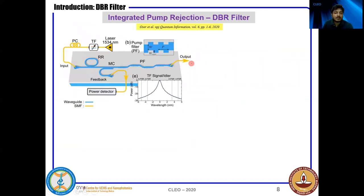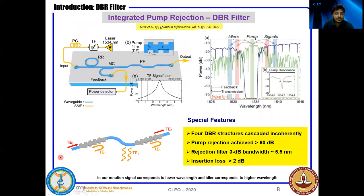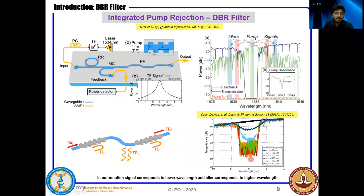Recently, Osar et al. demonstrated high-quality entanglement from a ring resonator by integrating a four-stage DBR with it. In their DBR design, the input waveguide is fundamental-moded. When TE0 is launched into the DBR with a special design, it is converted back into TE1, which does not couple back into the input that supports only TE0. So the reflection from each stage does not pass through previous stages, and as a result you can cascade many individual stages. They achieved extinction greater than 60 dB with a 3 dB bandwidth of 5.5 nanometers and insertion loss just greater than 2 dB. However, a single stage saturates around 40 dB after 300 microns, so four stages are needed. If we can increase the single-stage extinction, we can cascade fewer stages.